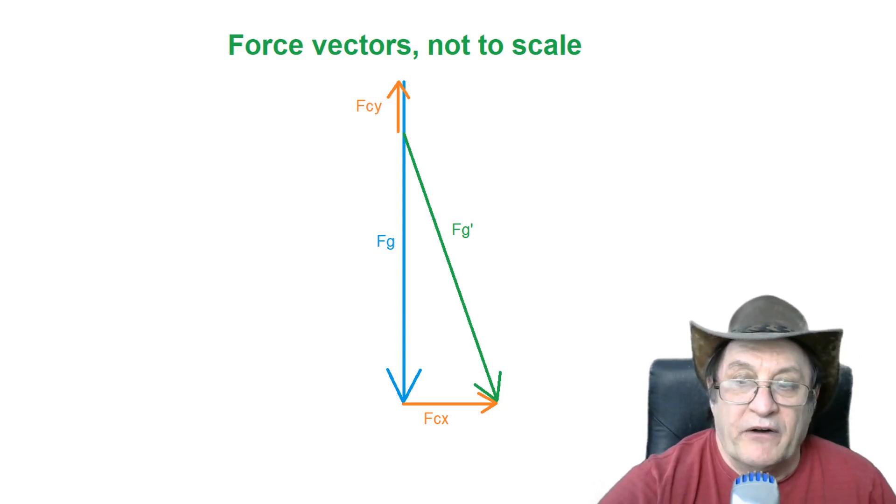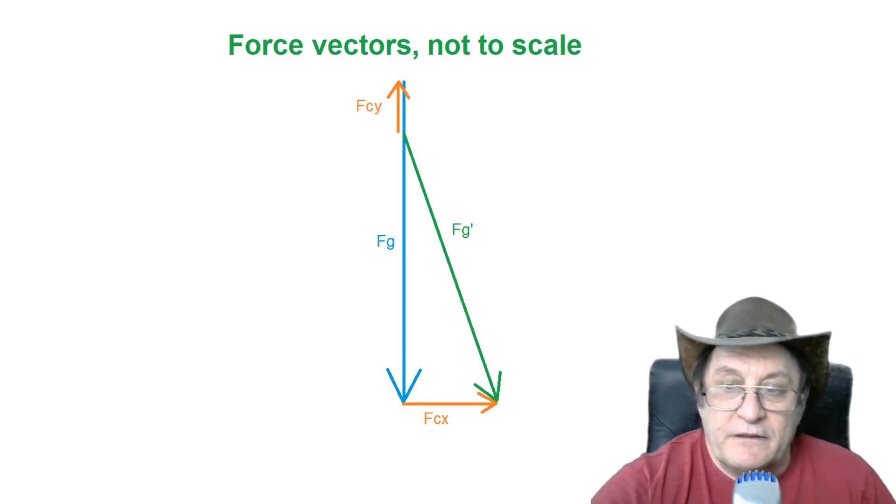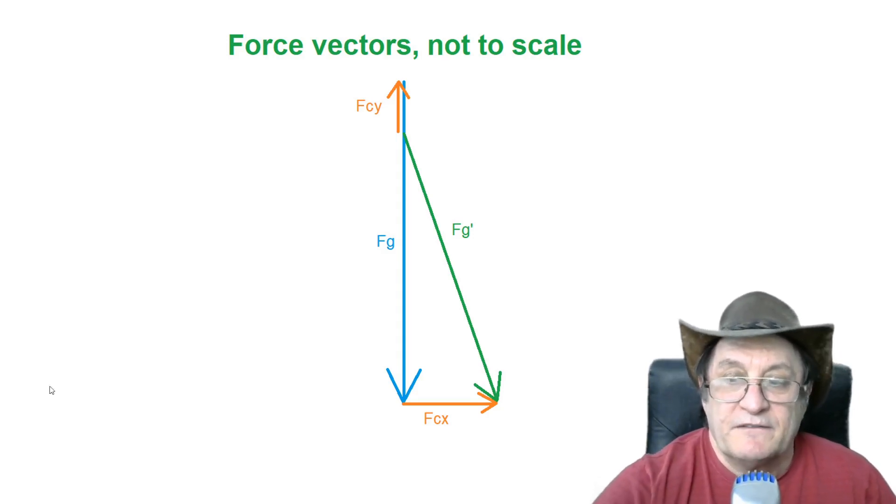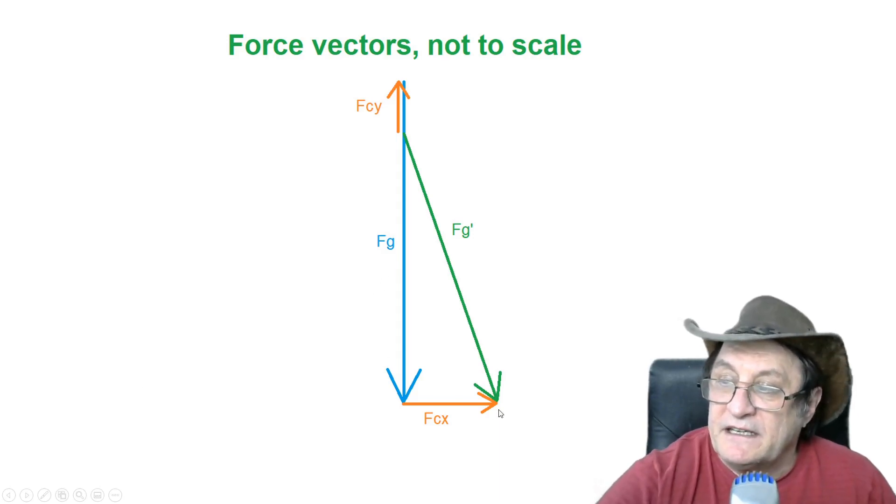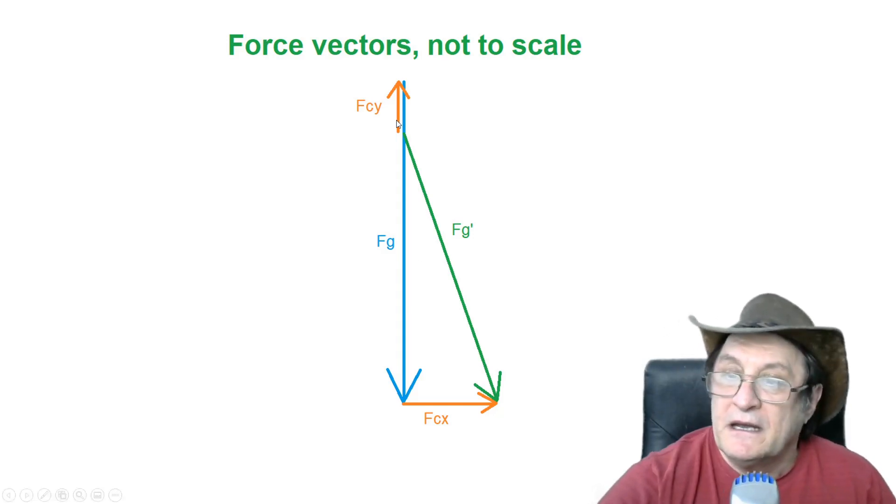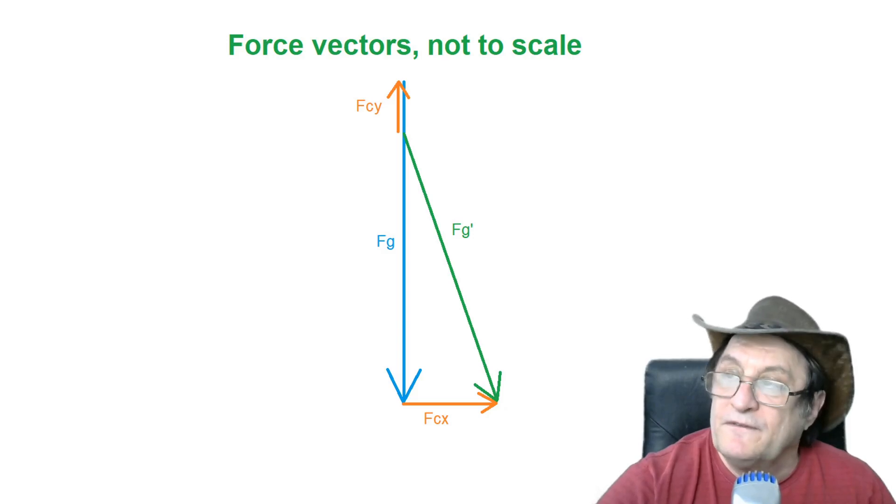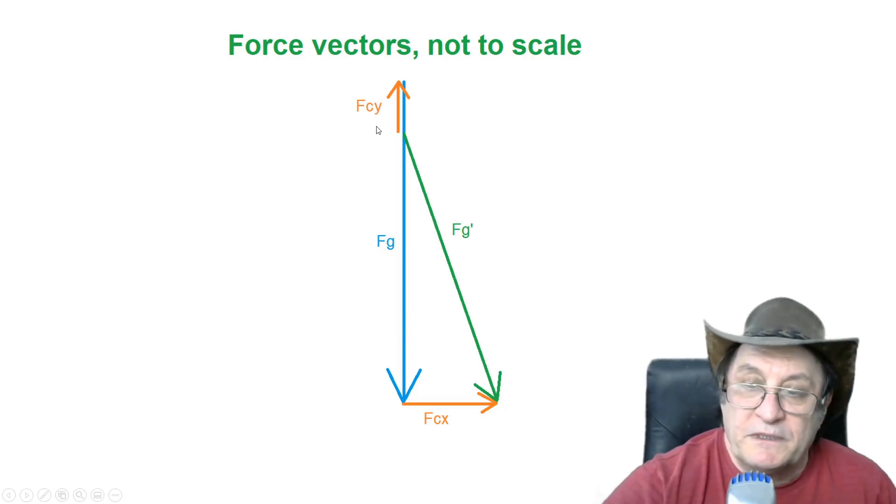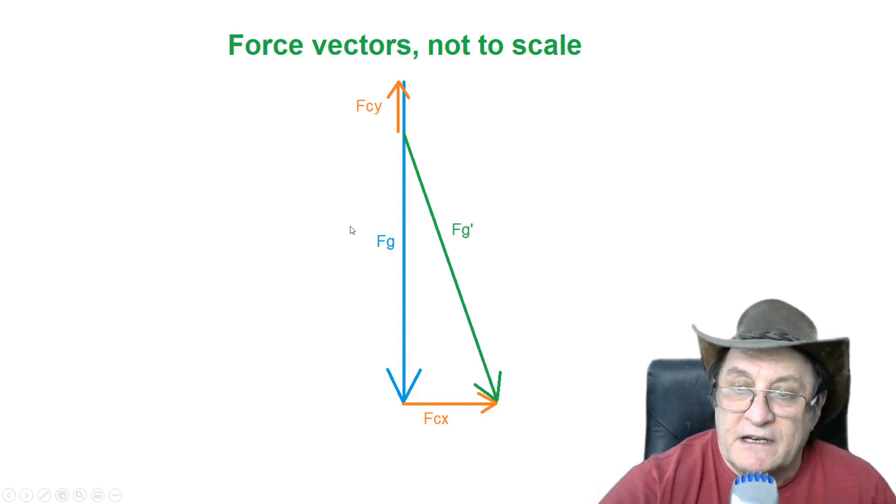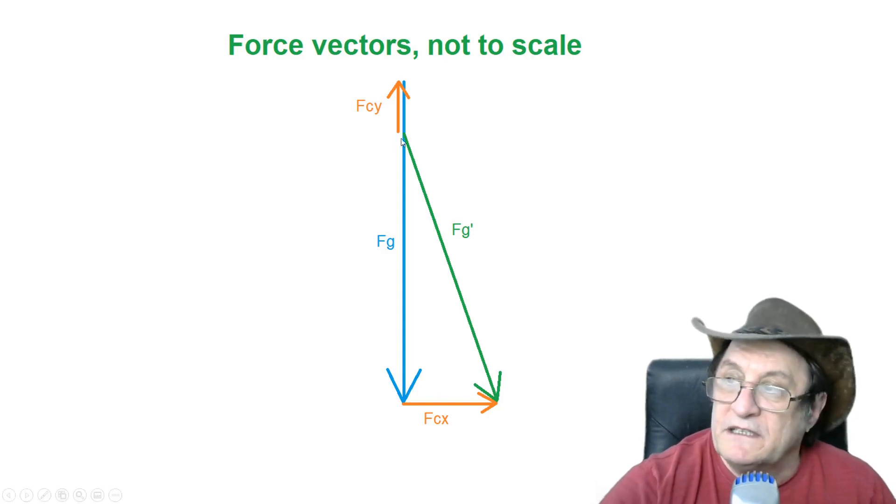So the forces acting on anything on the surface of the Earth or even in the air, we have FG which is the force of gravity, FCX is the centrifugal force in the tangential direction to the surface, and FCY is the centrifugal force in the perpendicular direction working opposite to gravity. The centrifugal force and the force of gravity are both operating on an object, and the net effect is a force that is indicated by this vector FG'.